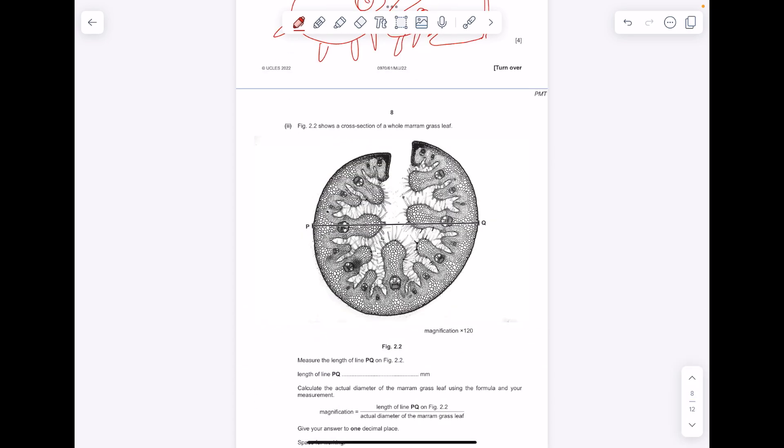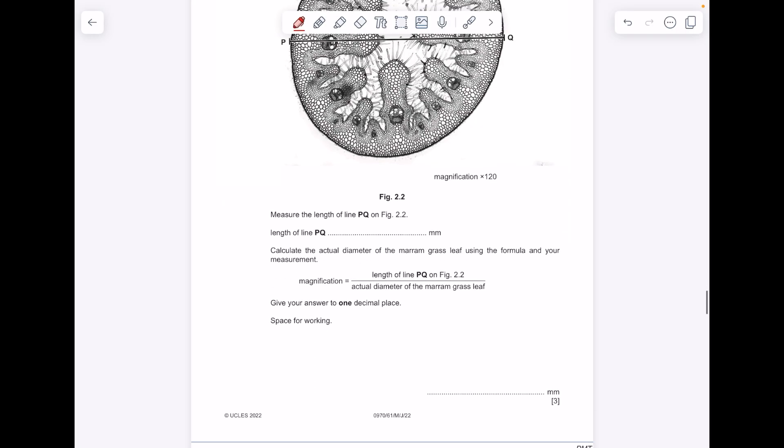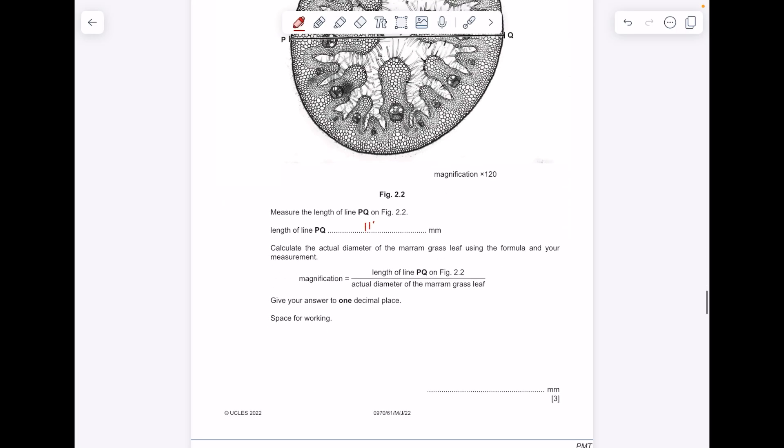Figure 2.2 shows a cross-section of the whole marum grass leaf. Measure the length of the line PQ. So we're measuring this line. Make sure it's in millimeters. Use your ruler nice and accurately. It's 112 millimeters.